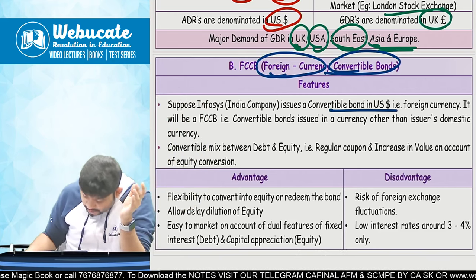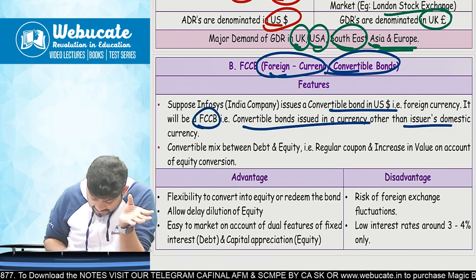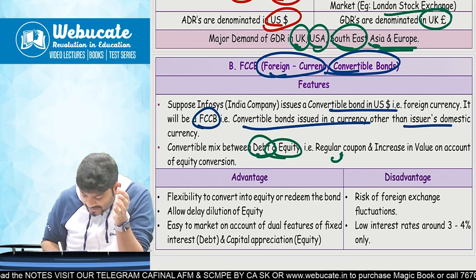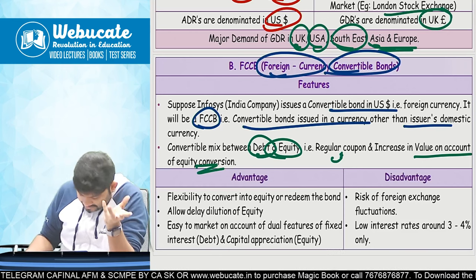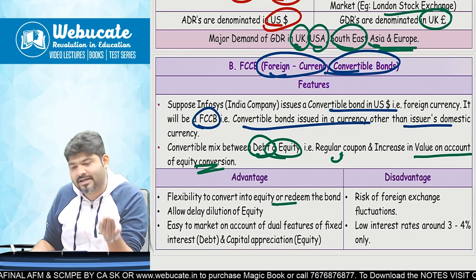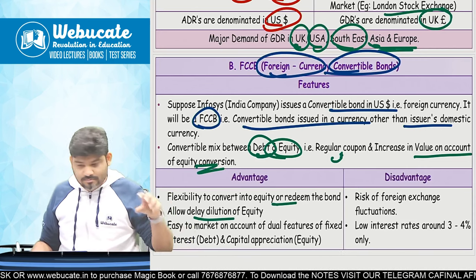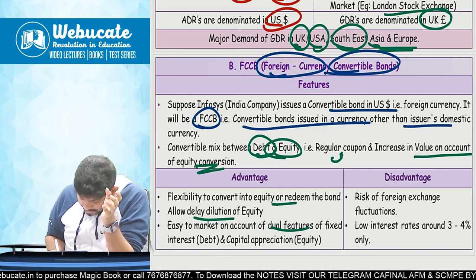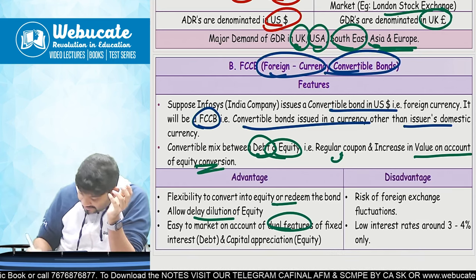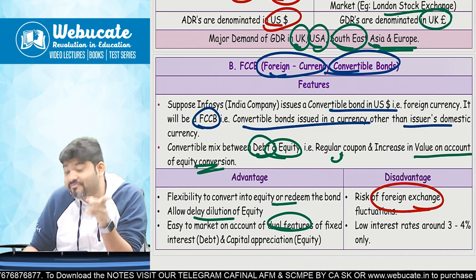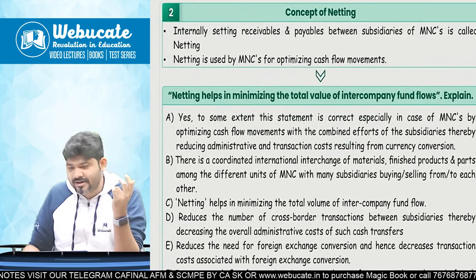Suppose Infosys issues a convertible bond in US dollars — that is FCCB. It is a mix between debt and equity: you get a regular coupon like debt, and when converted, the value of equity increases. Advantages: flexibility to convert into equity or redeem the bond, allows delayed dilution of equity — you get the funds now and equity dilutes at a future date — and it is easy to market due to dual features of fixed coupon plus later equity conversion. Disadvantage: risk of foreign exchange fluctuations since it is foreign currency denominated, and interest rates are usually limited.